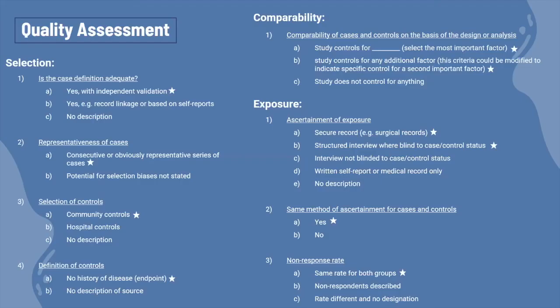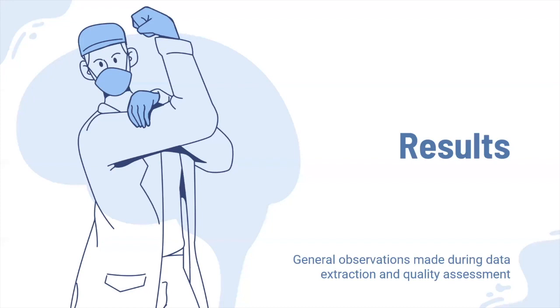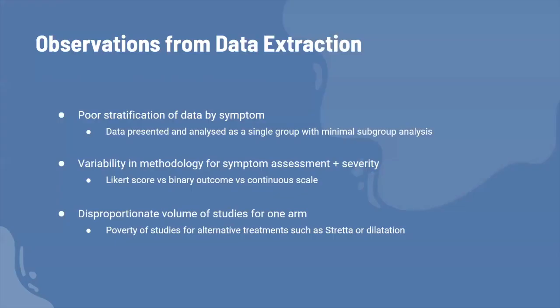For the quality assessment, we mainly used the Newcastle-Ottawa Scale because most were case series and case controls. We assessed each study for selection bias, comparability bias, and exposure bias, arriving at a risk of bias rating — low, high, or unclear — for each subsection, as well as an overall risk of bias. Because the meta-analysis is yet to be performed, we don't have formal results, but I have included some general observations from the investigators.